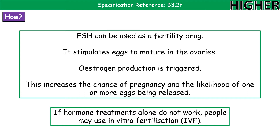We tend to go for hormone treatments where possible first, rather than jumping straight to the highest intervention level. The first step is normally a hormone treatment. FSH — follicle stimulating hormone, which we've already heard about in the menstrual cycle — can be used as a fertility drug to stimulate extra egg maturation in the ovaries. Higher FSH levels also trigger increased oestrogen production, giving an increased chance of pregnancy. However, because we're artificially introducing FSH to stimulate eggs to mature, there is a greater risk that more than one egg matures at the same time, which is why the risk of multiple births increases with fertility treatments.